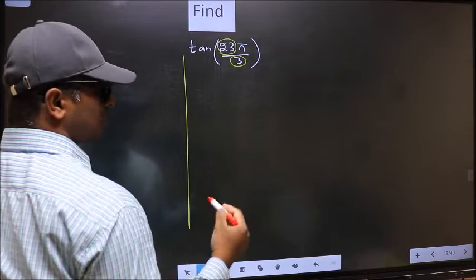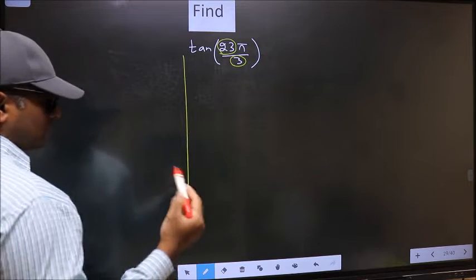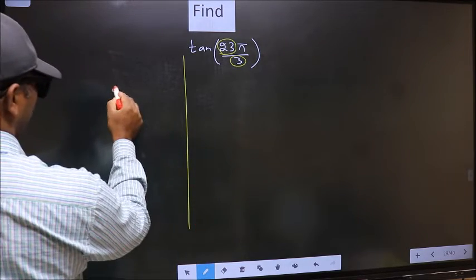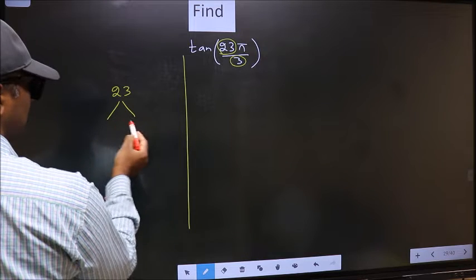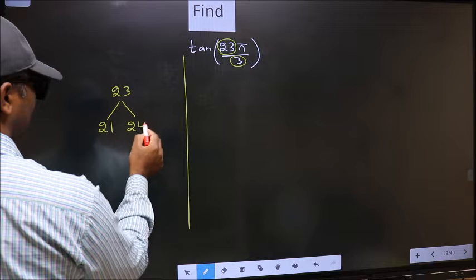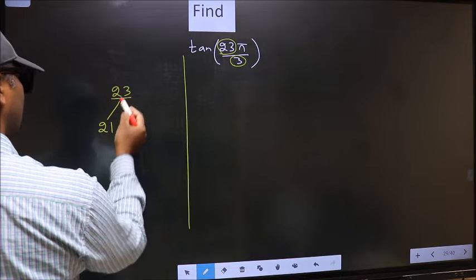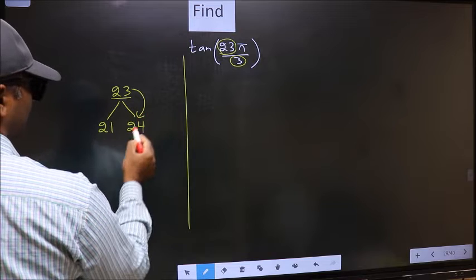Now you should check which multiple of 3 is closest to 23. Write multiples of 3: that is 21 and 24. Now 23 is close to which number? This is close to 24.